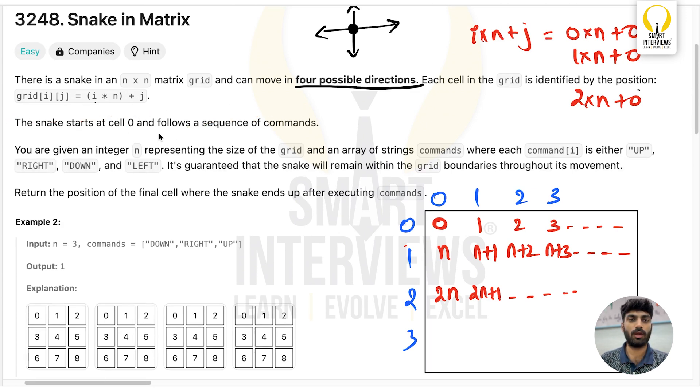The snake starts at cell 0 and follows a sequence of commands. Your starting point is zero. You are given an integer n representing the size of the grid and an array of strings commands, where each command is either UP, RIGHT, DOWN, or LEFT.